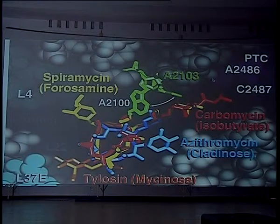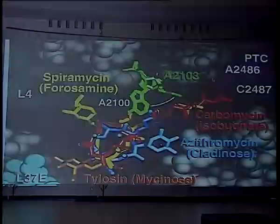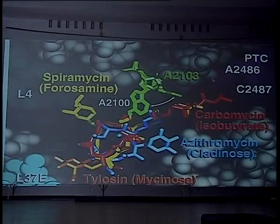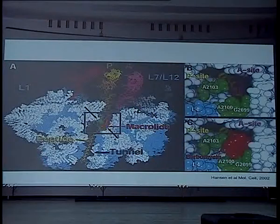The macrolides have a ring with a number of atoms — 14, 15, and 16. Here are the 15 and 16 membered ones. The rings are all superimposed. They differ by having different groups hanging out and interacting — that's what makes the antibiotics different. They're all interacting with RNA, not with protein. So then the question is, how do they inhibit?